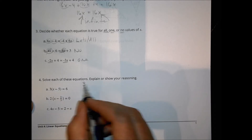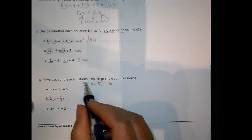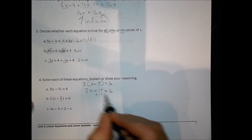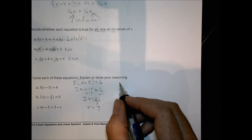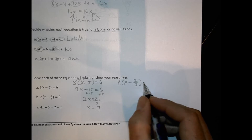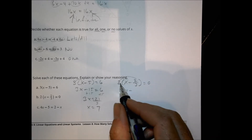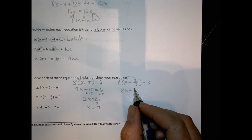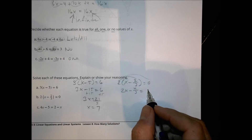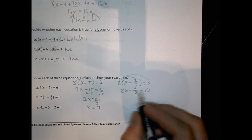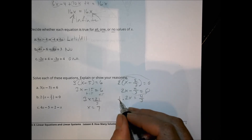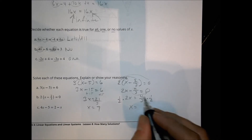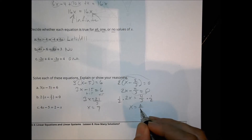Homework number 4 — solve each equation. Part A: 3 times (x minus 5) equals 6. Distributing: 3x minus 15 equals 6. Add 15: 3x equals 21. Divide by 3: x equals 7. Part B: 2 times (x minus 2/3) equals 0. Distributing: 2x minus 4/3 equals 0. Add 4/3: 2x equals 4/3. Multiply by 1/2: x equals 2/3.